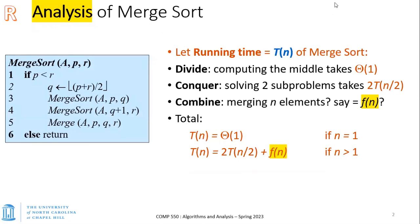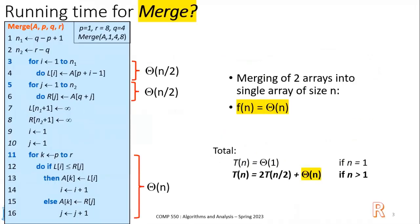This is a review from the last lecture. Our analysis of merge sort found that T(n) = Θ(1) when n = 1, and for n > 1: T(n) = 2T(n/2) + f(n), dividing the problem into two halves. The work to divide and recombine results is f(n), and for merge sort f(n) = Θ(n).